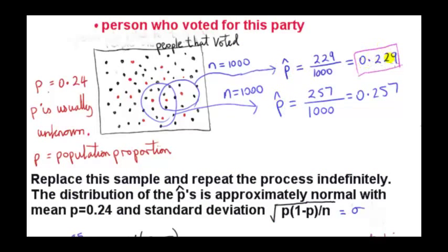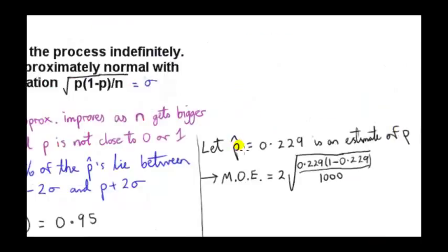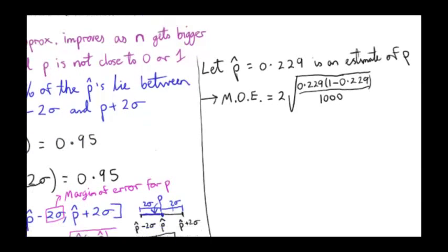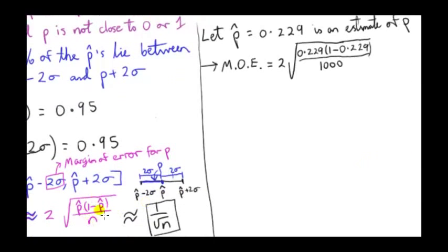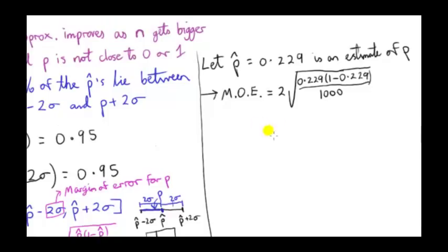Let's do a quick example. Let's use this value here for our P hat. We pretend we don't know what P is. So with this as our estimate of P, let's get the margin of error. We just plug in 0.229 into this formula, or alternatively we can just work out 1 over root n where n is a thousand.